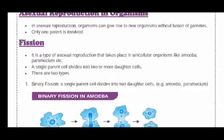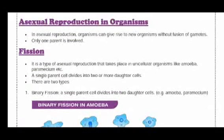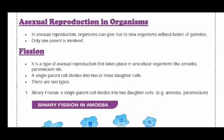Now we will focus on asexual reproduction. In asexual reproduction, an organism can give rise to new organisms without the fusion of gametes. One single parent can be involved in this process. Since no sex organ is involved, no gametes are produced.